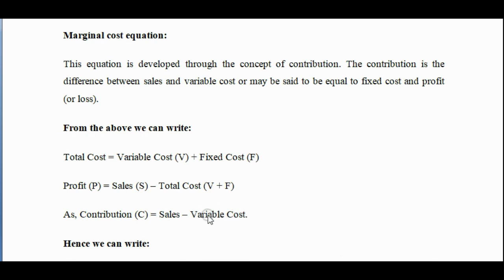Variable cost means when one unit increases, the total cost increases by a certain amount. You take the total sales amount, minus that increase amount, and what is left is the contribution. Okay, thank you.